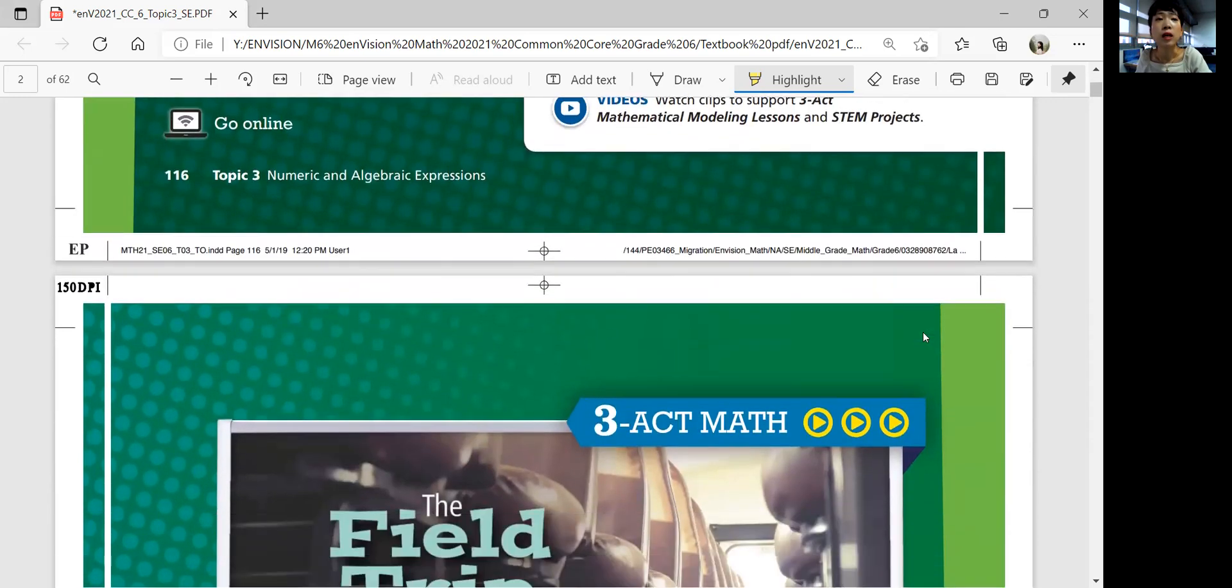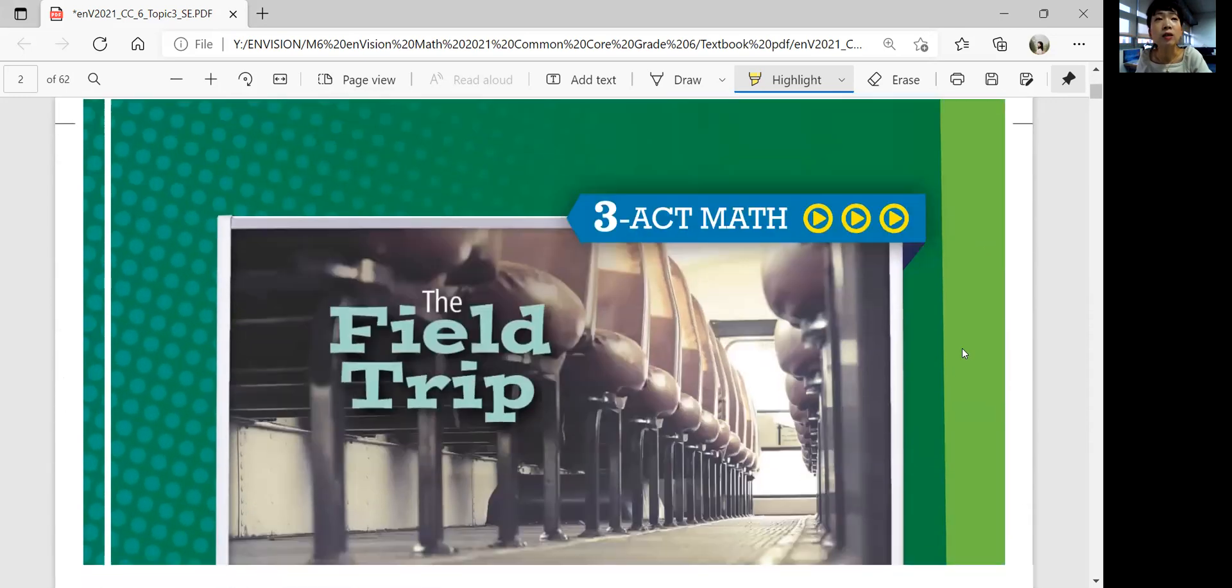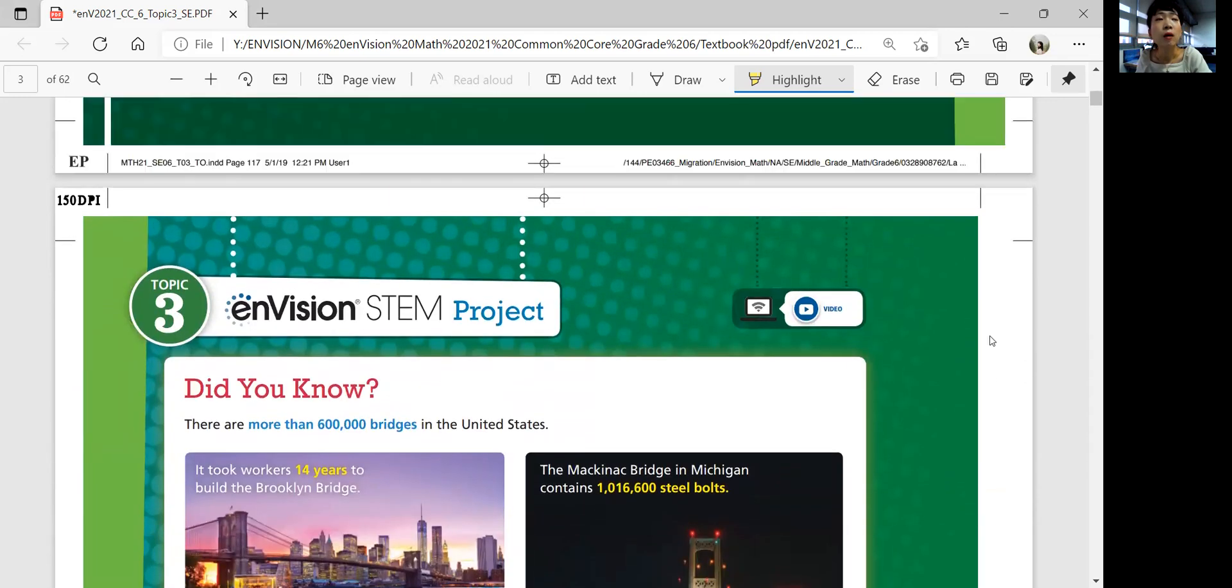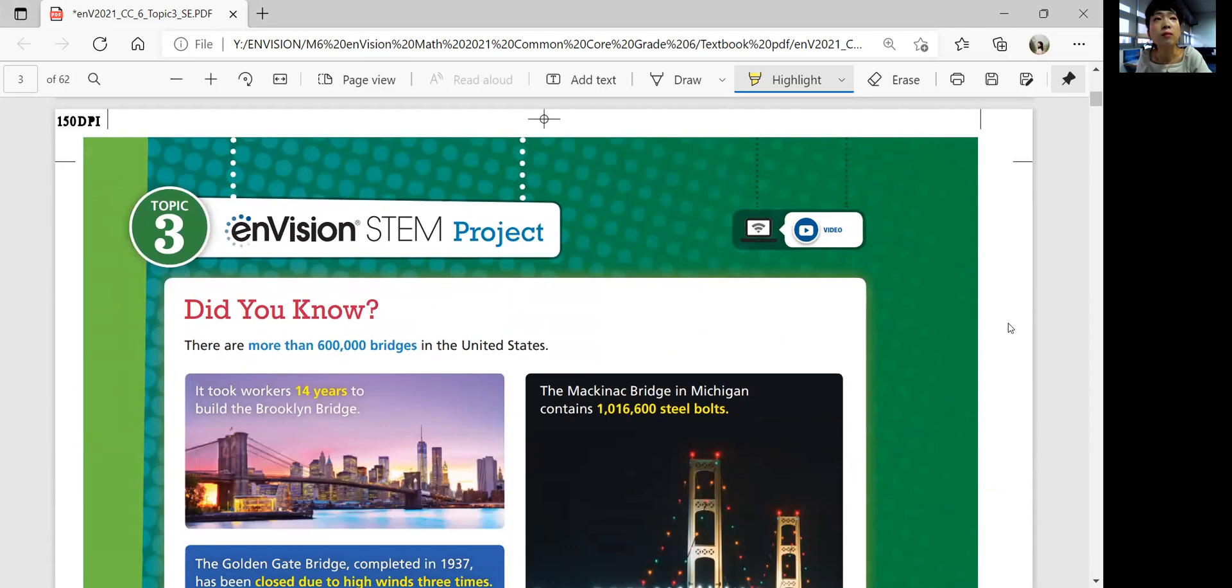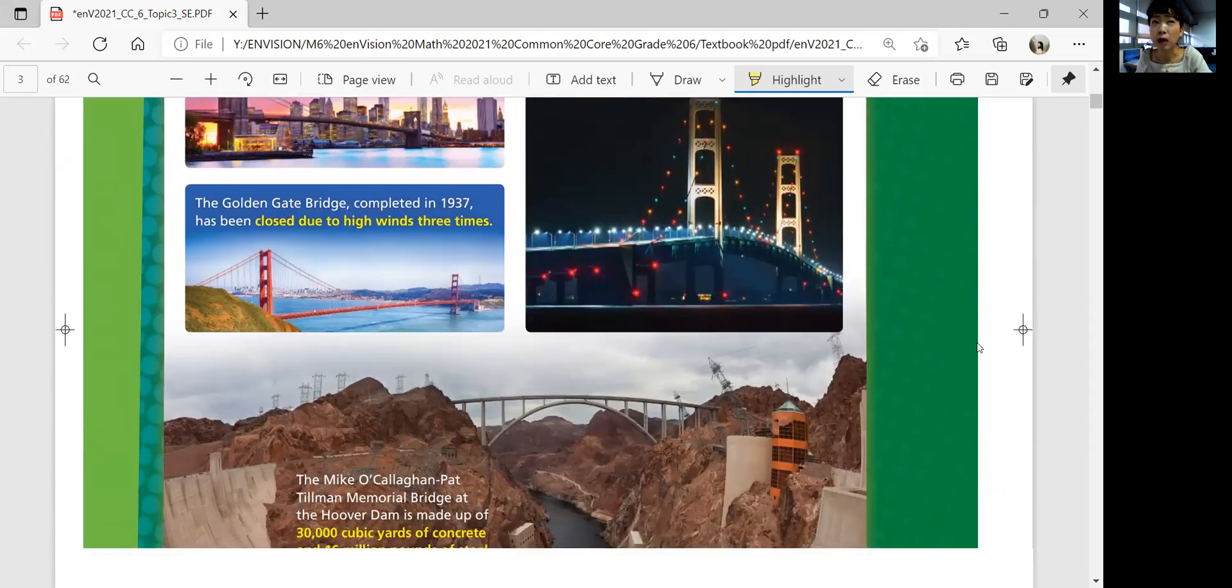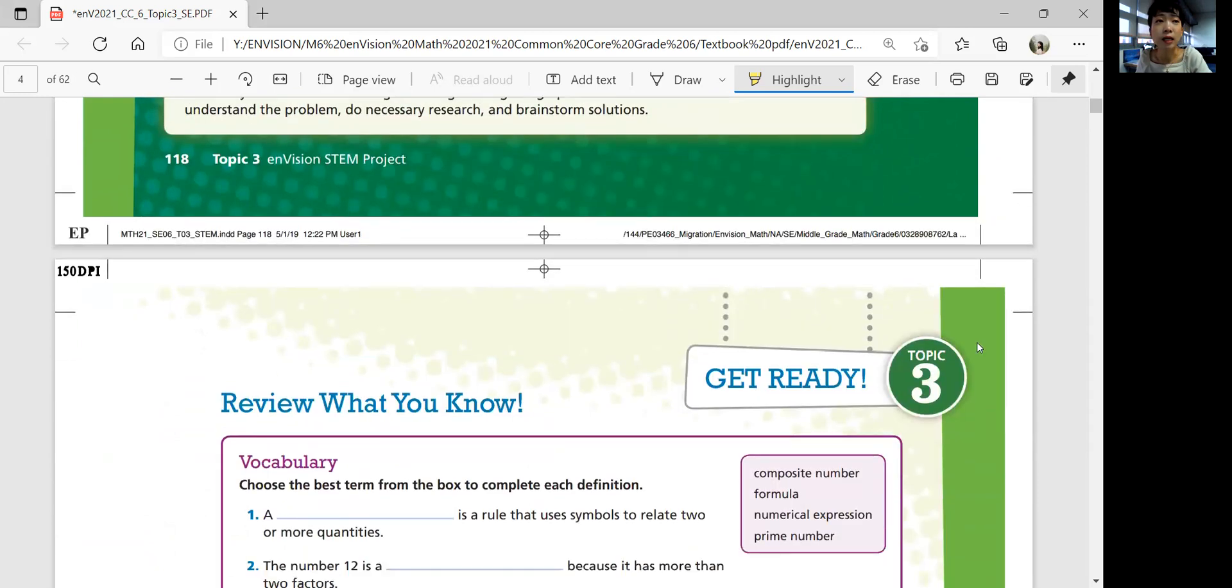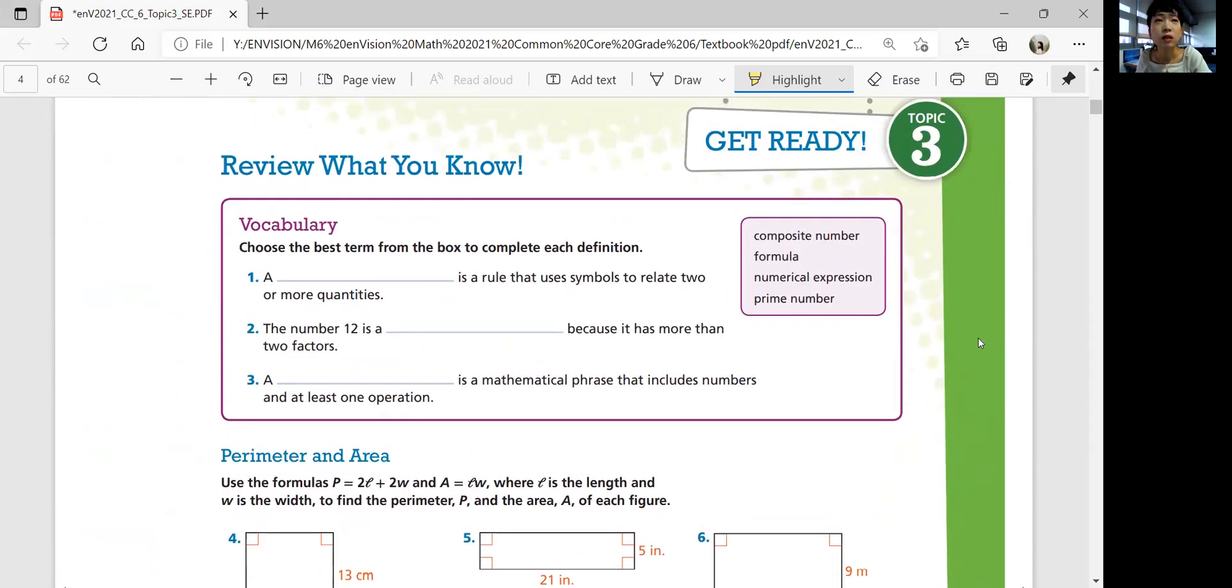You will look at this video later in 3X Math Day, but you should have seen the STEM project video intro in class. Let's go over some vocabulary before we get started. A blank is a rule that uses symbols to relate two or more quantities. This is going to be a formula.